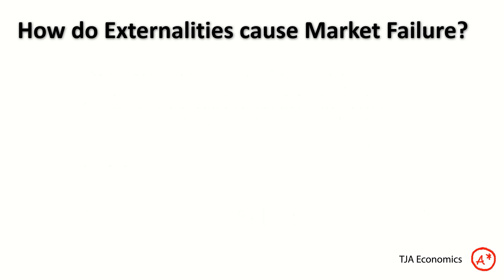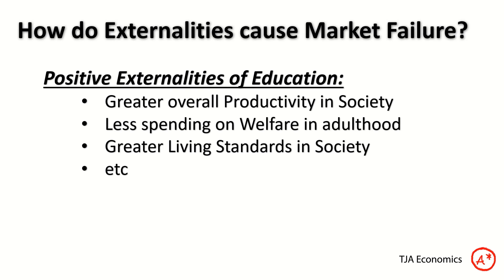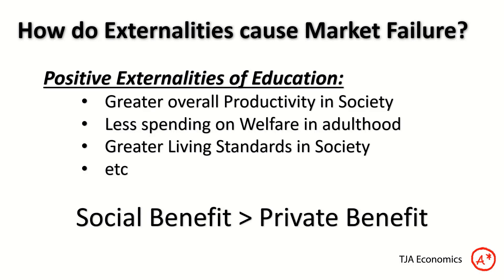It can work the other way too. Let's look at education. There are positive externalities — external benefits — to education. There will be greater overall productivity in society, raising growth, living standards, and incomes. If you are more educated, you may have less reliance on the welfare state, meaning the government can lower its spending and taxes, benefiting other people. In general, society may be better off for you being more educated. So there are significant external benefits of education. This means the social benefit — the benefit society gains from your education — is greater than the private benefit you gain.